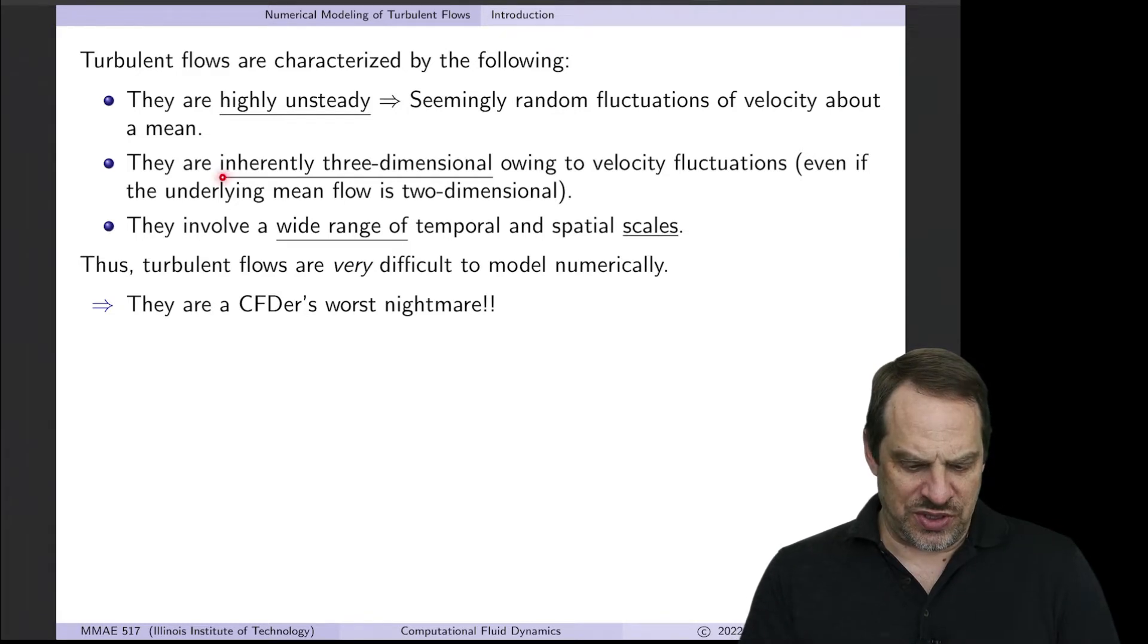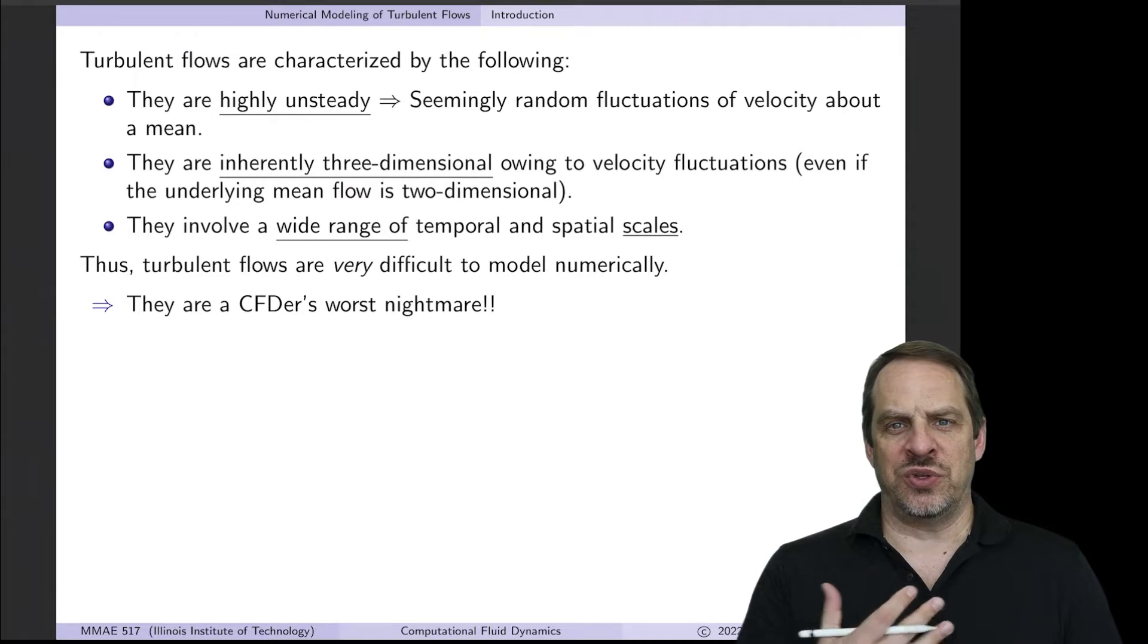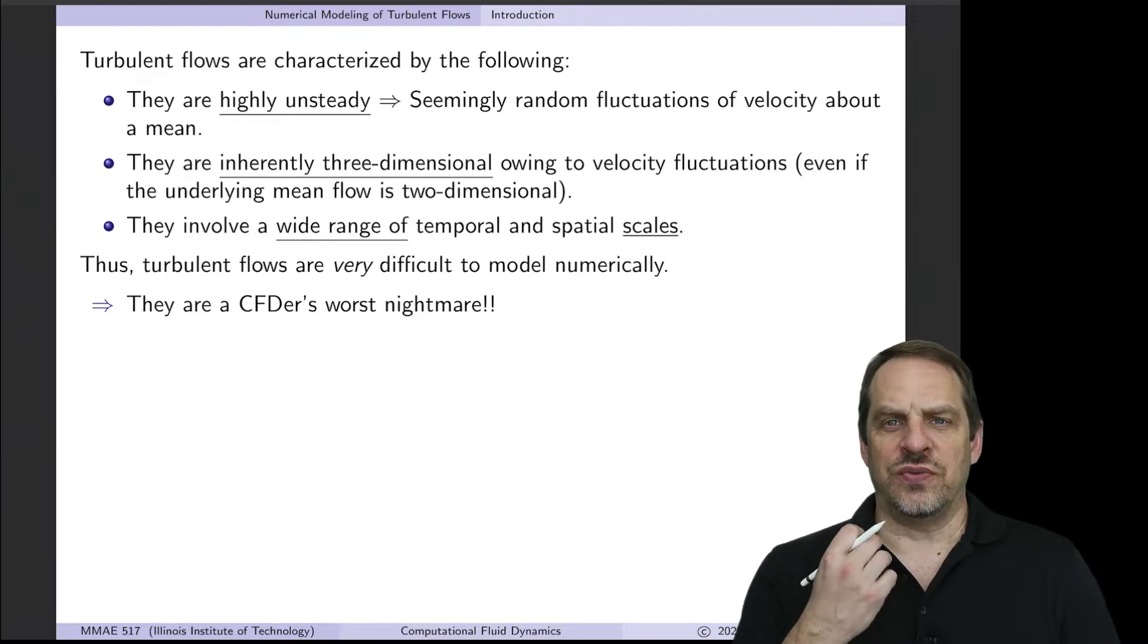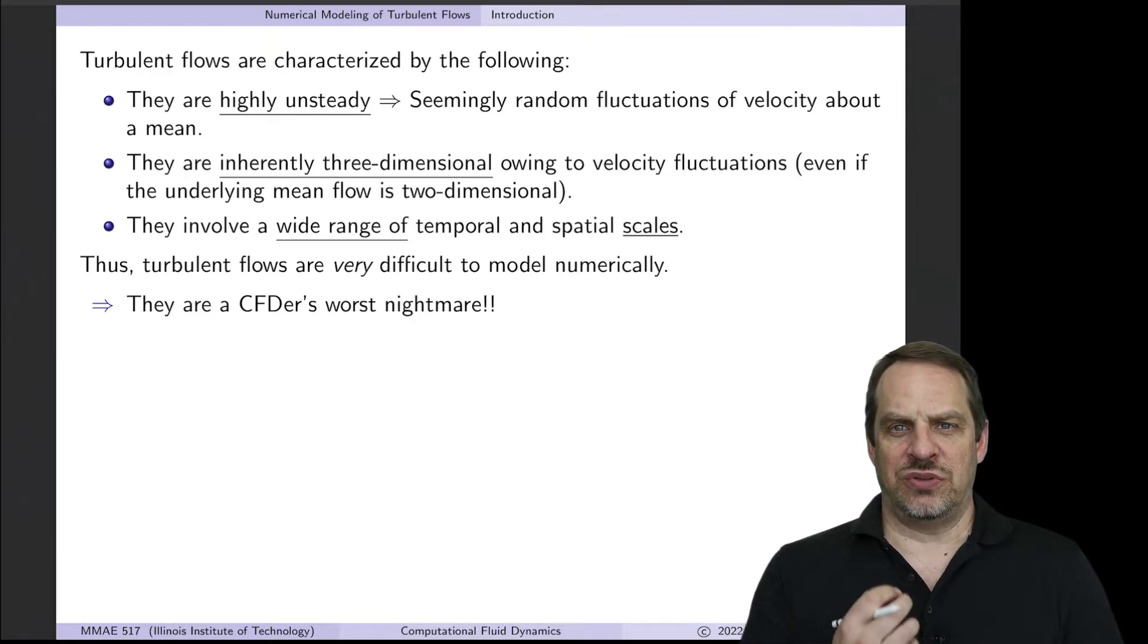The second characteristic is that they are inherently three-dimensional. So even if your underlying flow is two-dimensional, because of these velocity fluctuations that are going to occur in all three dimensions, the flow is inherently three-dimensional no matter what.